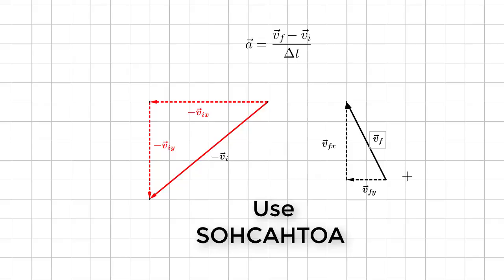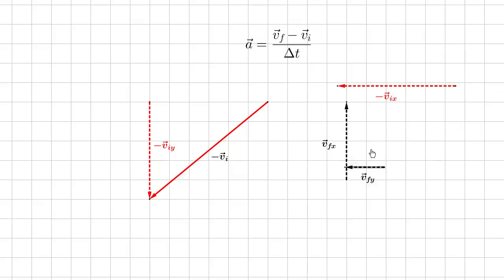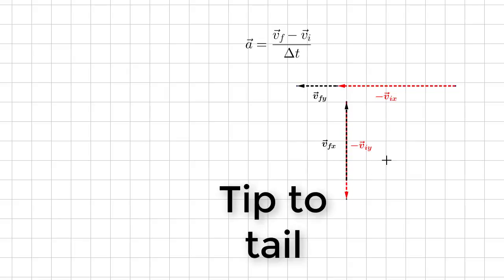Once we have the components figured out, which is very easy to do using SOHCAHTOA, we just have to add the components. As you can see, there's been a lot of acceleration in one direction, and we have actually slowed down in the other direction.